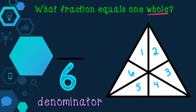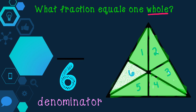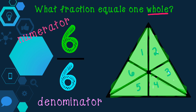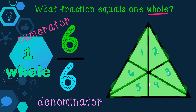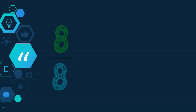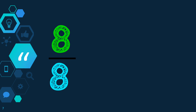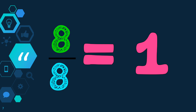Now we are going to shade each part until the whole triangle is shaded in: 1, 2, 3, 4, 5, 6. The number 6 goes in my numerator because I had to shade 6 parts to color in the entire triangle. Now, if we look at the numerator and the denominator, they are both the same. So when the numerator and the denominator are the same numbers, it equals 1 whole. Today we learned that when the numerator and denominator are the same numbers, the fraction equals 1 whole.